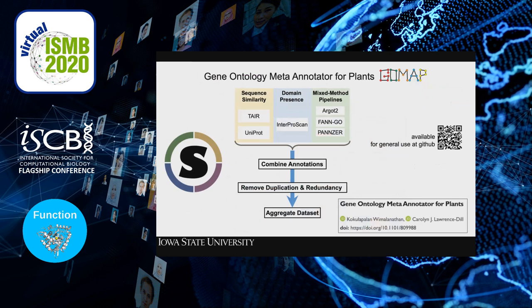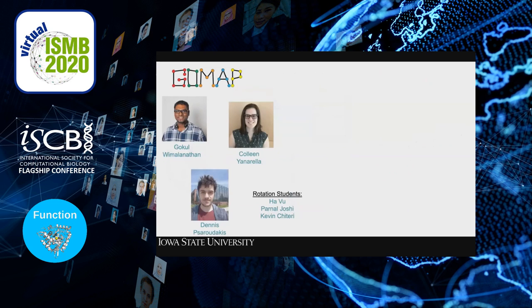The GoMap pipeline has been containerized and is available for general use at GitHub, with a description at BioArchive. With this system ready, we decided to use it on lots of different crops needing improved functional annotations. Students Gokul, Colleen, and Dennis — along with Ha, Parnal, and Kevin — annotated plant genomes covering monocots, dicots, and a gymnosperm, sugar pine.